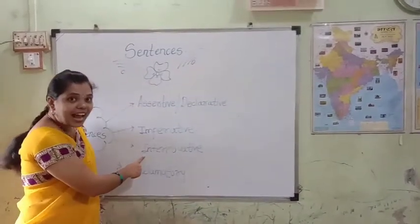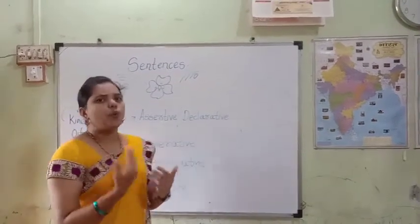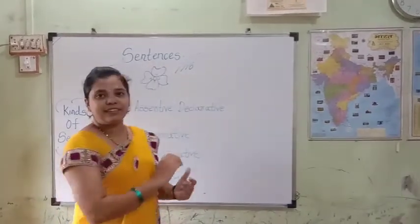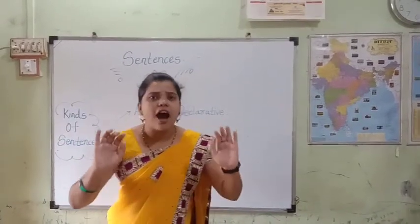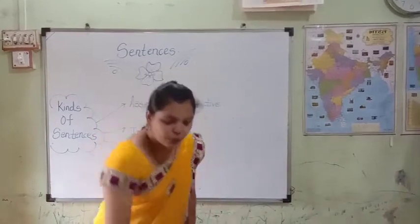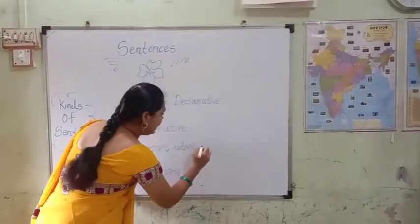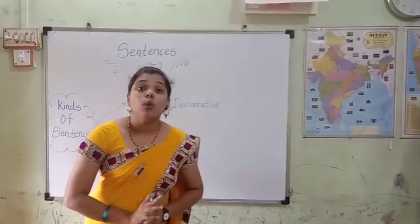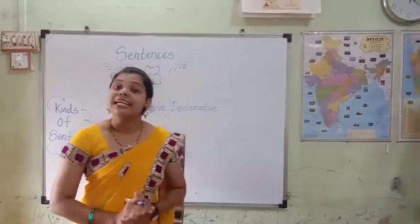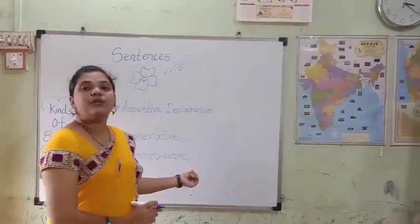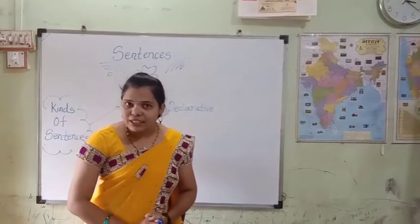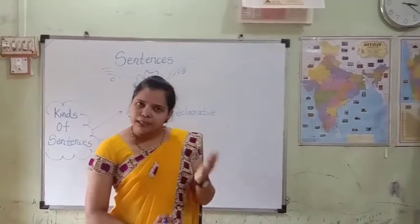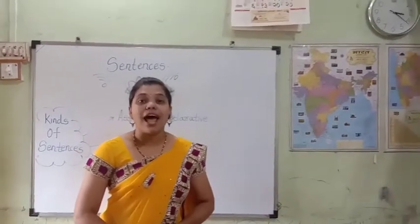Third type of sentence: interrogative sentence. Whenever we want to question someone, that time we are using interrogative sentences, and interrogative sentences are always ended with a question mark. Like: 'What are you doing?' 'Are you okay?' 'Are you listening to me?' These kinds of sentences are known as interrogative sentences.